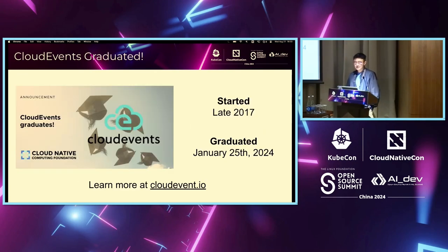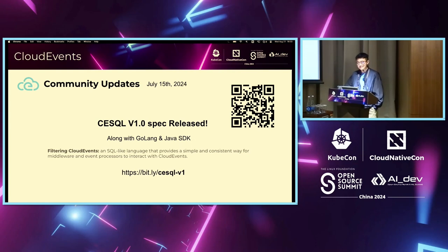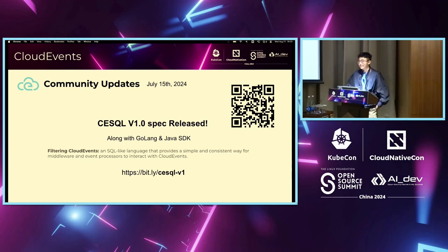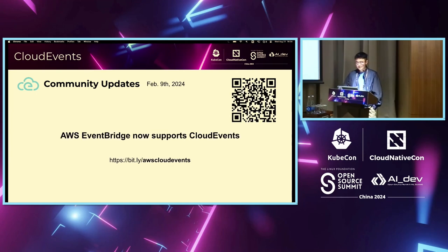Now let's share some updates from the community. Cloud Events recently graduated — feel free to visit the website to read more. The new CESQL spec goes to version 1.0, and at the same time we released the Golang and Java SDK. CESQL is an SQL-like language providing a better and simpler way to do event filtering. You can scan the QR code to read more. Also, Amazon Web Services EventBridge now supports Cloud Events as well.